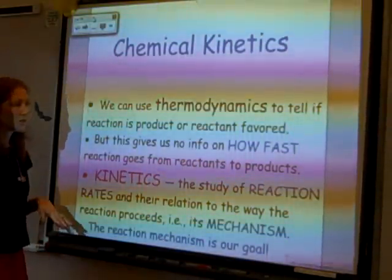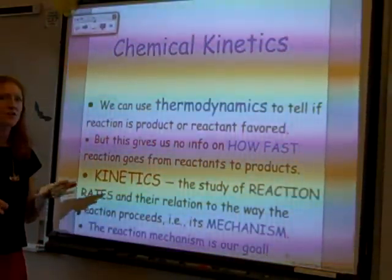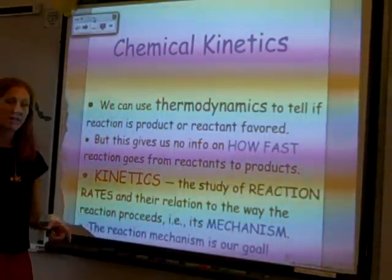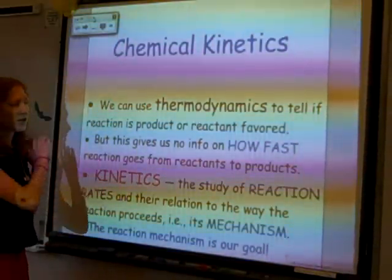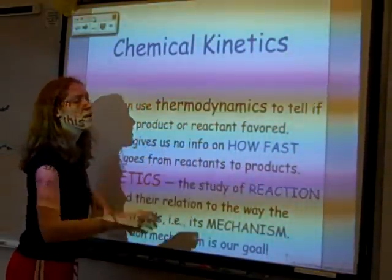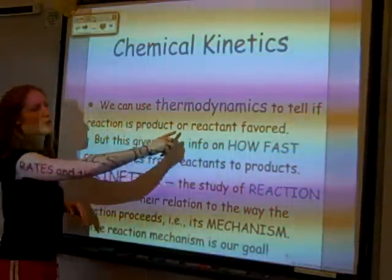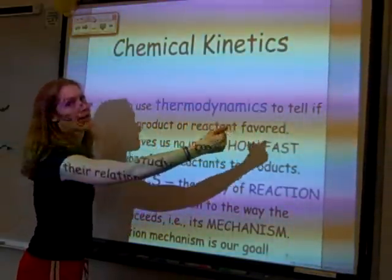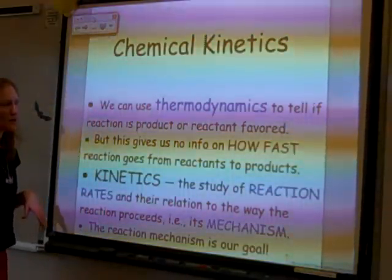We just finished thermodynamics. In thermodynamics, you looked at whether a reaction occurs. The way you did that is you looked at the sign of the Gibbs free energy. If you had a negative Gibbs, the reaction occurred — it was product favored, so you went from reactants to products. If you had a positive Gibbs, you had a reactant favored reaction, meaning the products turned back into reactants. And if Gibbs was zero, we're at equilibrium.